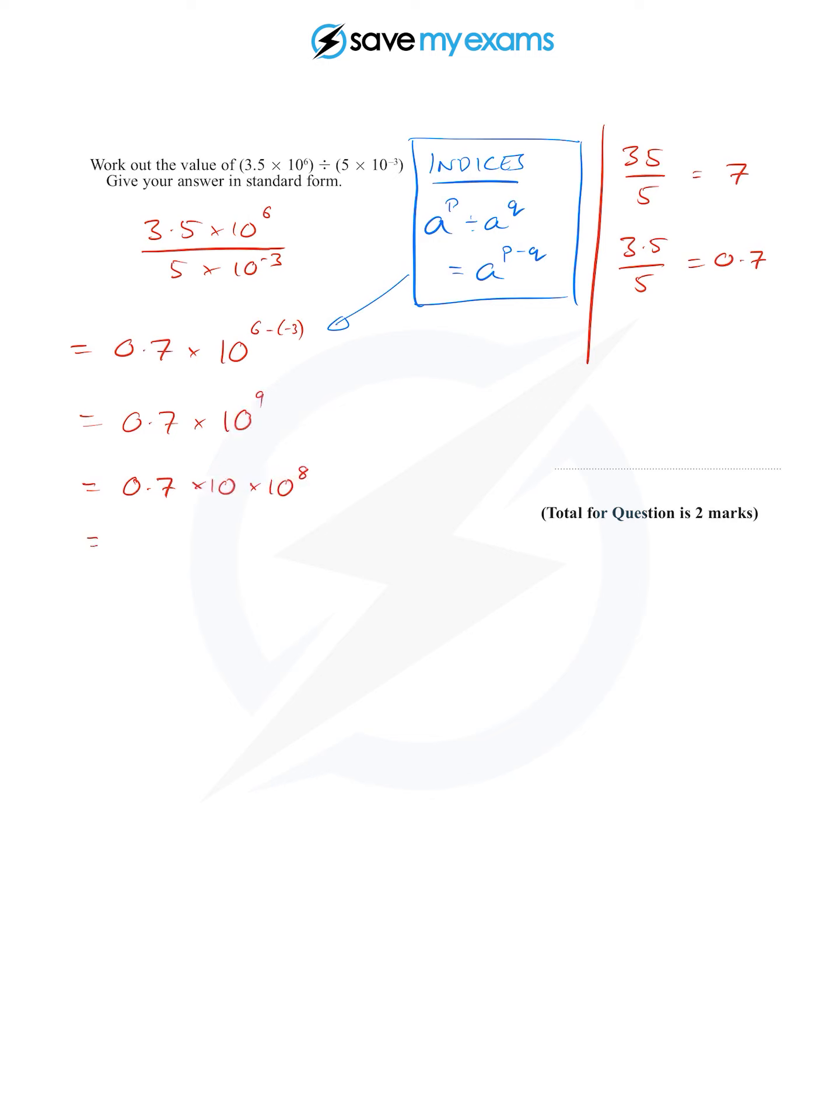So now I can write this as 0.7 × 10—the 10 I've just used from the 10^9. 0.7 × 10 is 7, and I've got times 10^8. That is now in standard form, and we're done.